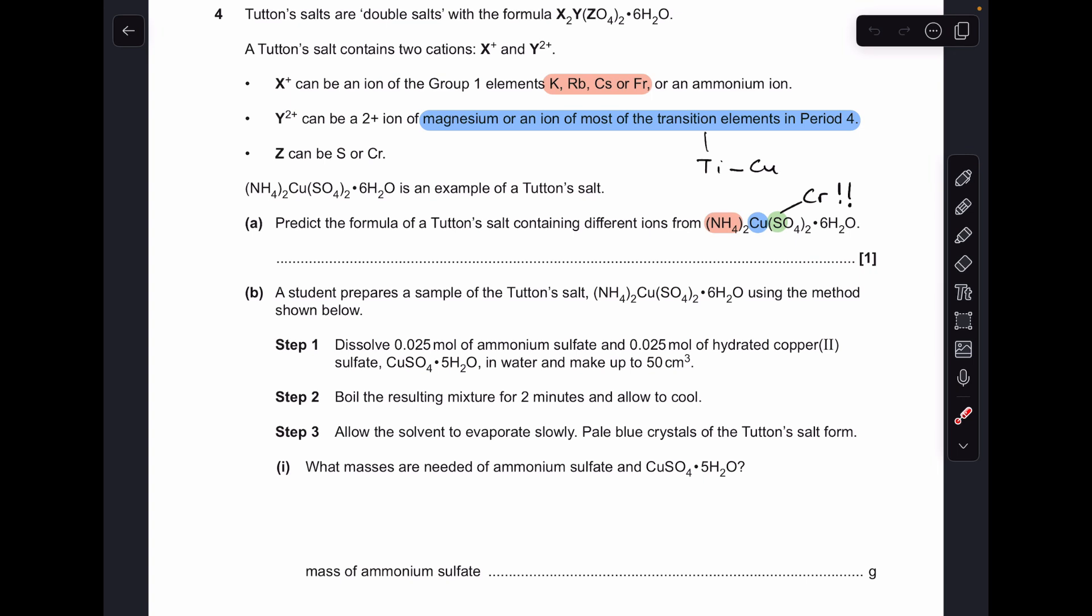Now transition elements, remember, start at titanium in period 4 and run to copper. So you can't have scandium or zinc because they are not transition elements. And there's only two options for this green element. So they've used sulphur there, so it has to be chromium. I've just gone for the first option in each of the first two bullet points. So potassium and magnesium.